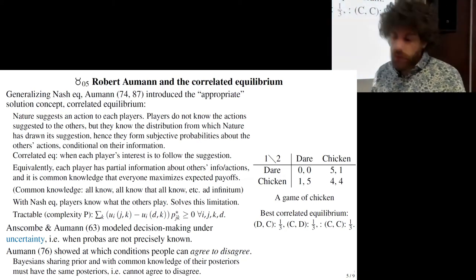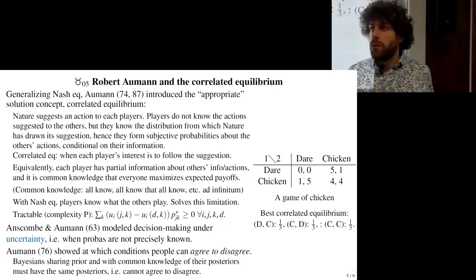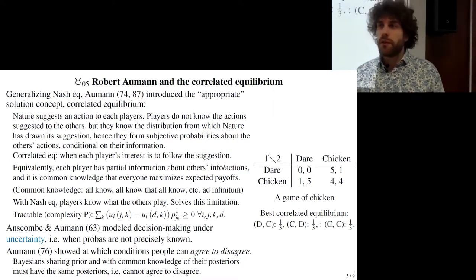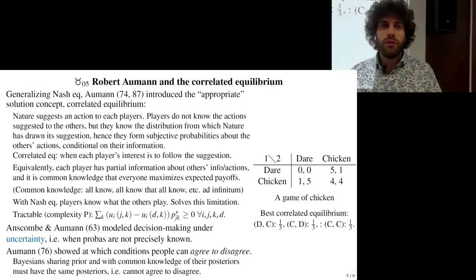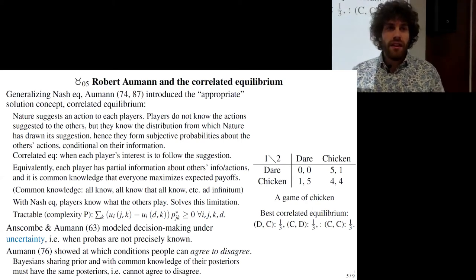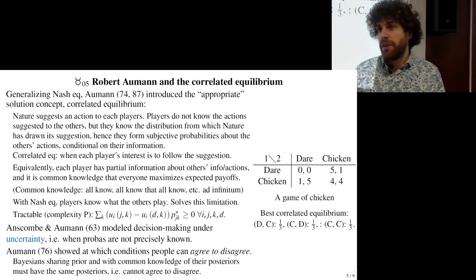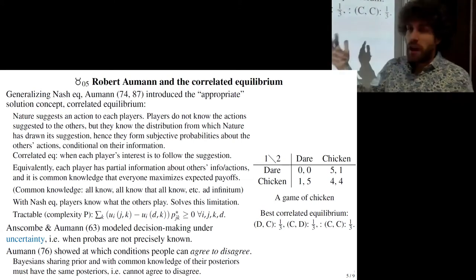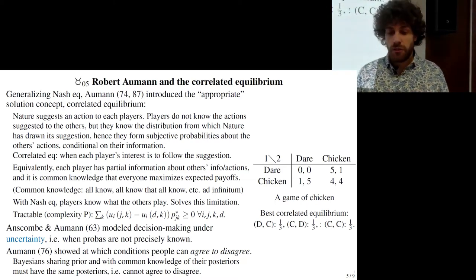Aumann showed that when people are Bayesian, share the same prior, and have common knowledge of their posterior — meaning each receives private information, updates their prior, reaches a new belief, and communicates this posterior to others — then people should have the same posterior belief. So people cannot agree to disagree.